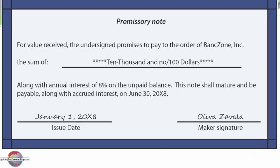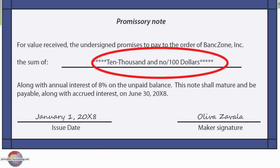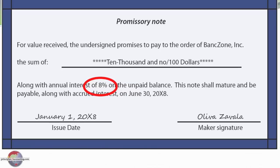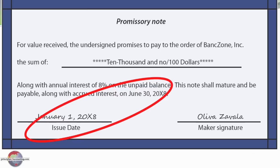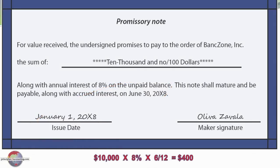Here's a picture of the note — a promissory note for value received. The undersigned promises to pay to the order of Bank Zone the sum of $10,000. That is the face amount of the note. The interest rate stated in the note is 8%, so we're going to pay the $10,000 along with annual interest of 8% on the unpaid balance. The note shall mature and be payable along with accrued interest on June 30th. Issued on January 1 and due June 30th — six months later — we calculate: $10,000 × 8% × 6/12 = $400 interest, making the total amount due $10,400.